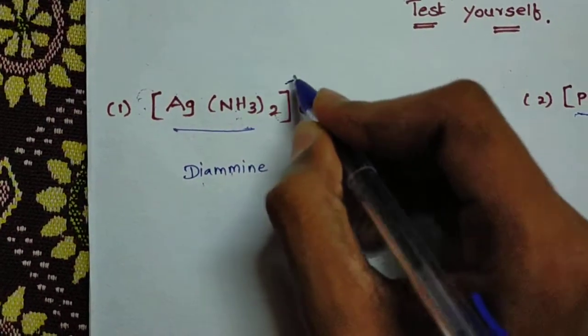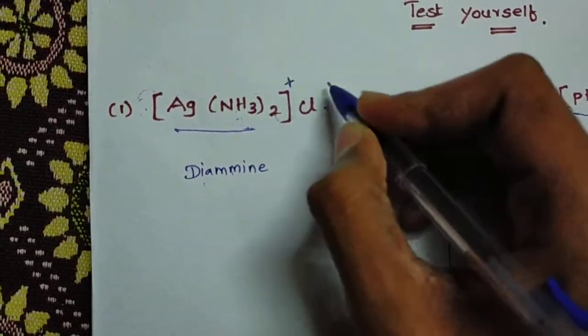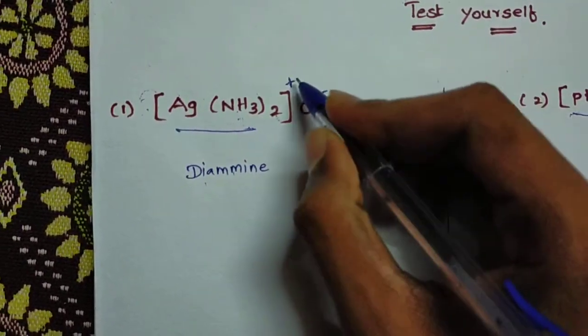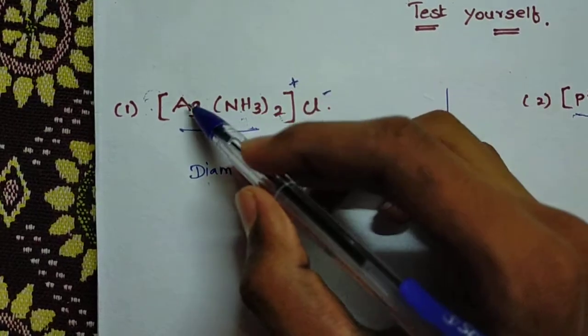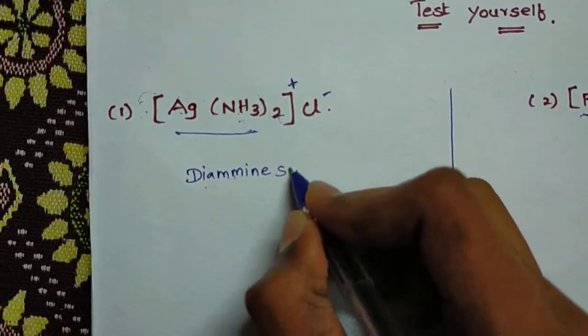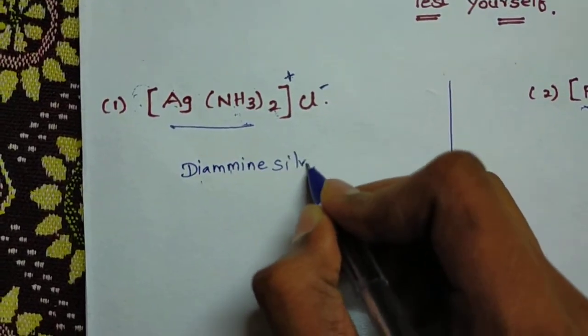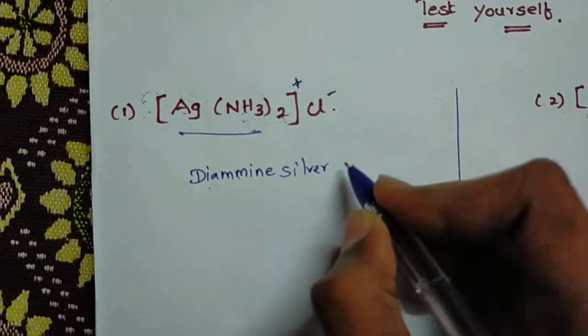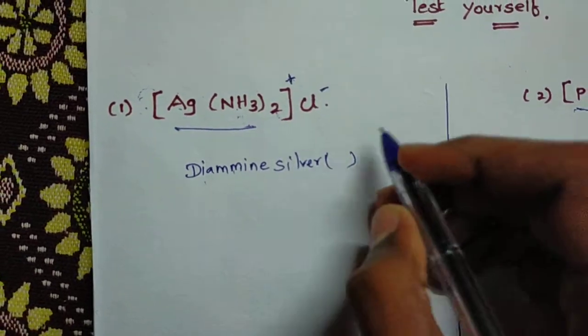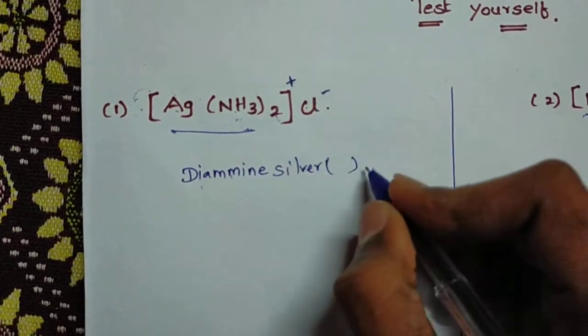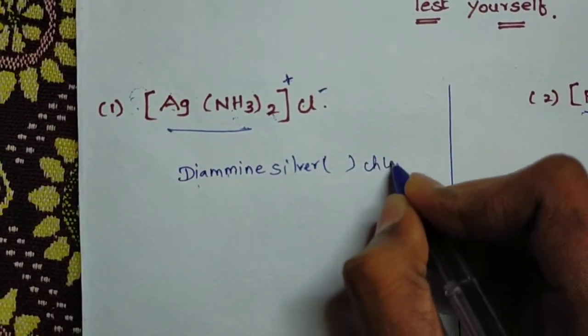So this is a positive, cation complex. The silver name is silver, so it becomes diamminesilver.